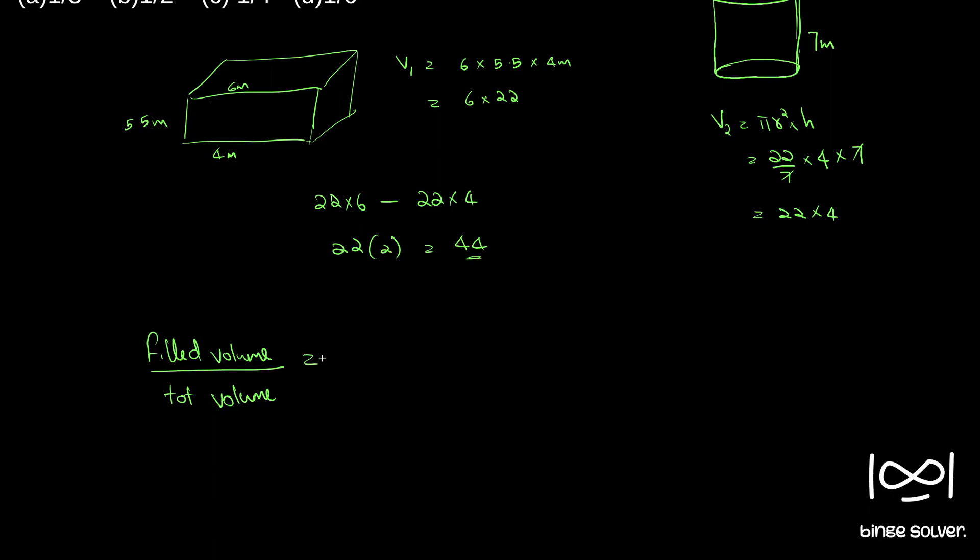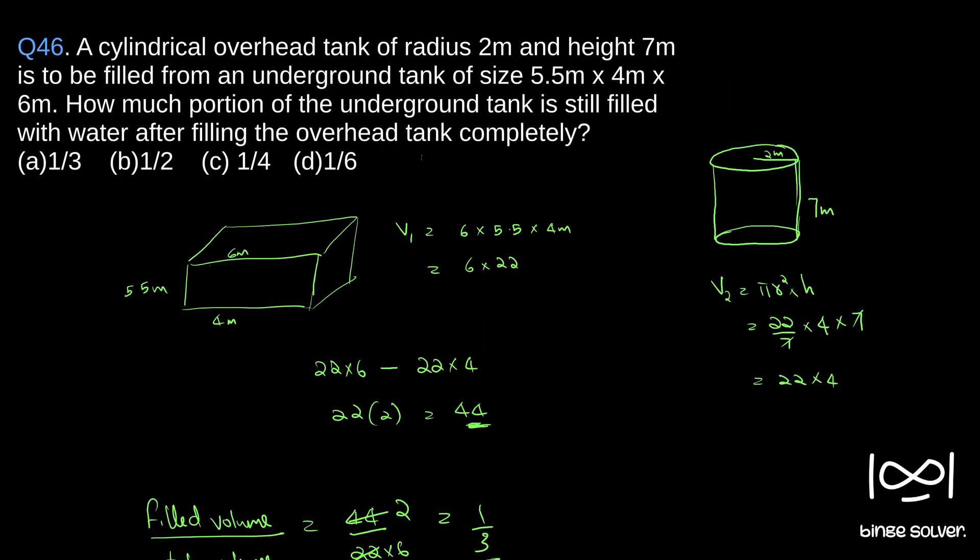So here, filled volume is 44. 44 divided by total volume, which is 6 × 22, equals 22 × 6. If you do this, 2 × 2 by 6 is 1/3. So the total portion that is filled is 1/3.